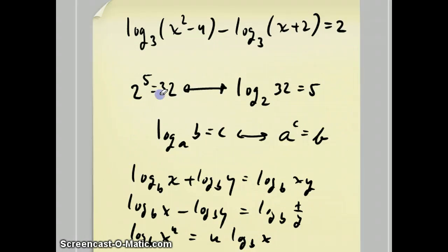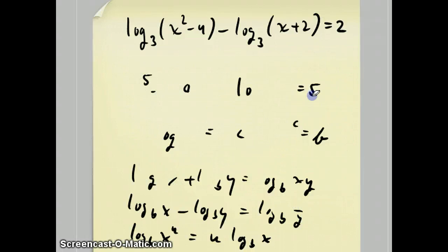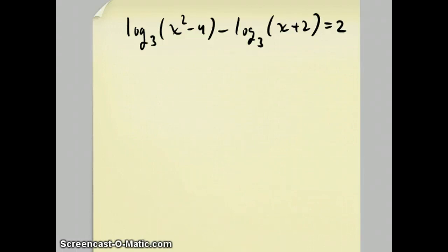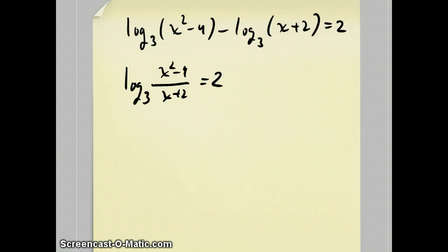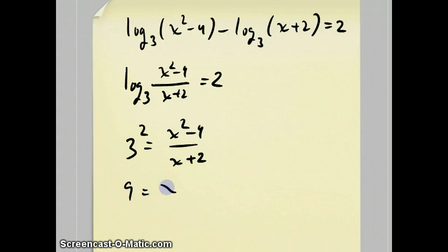Applying it to this question: use the second log rule to rewrite this as log base three of x squared minus four over x plus two equals two. We can now rearrange this to say three squared equals x squared minus four over x plus two, which is nine equals x squared minus four over x plus two. Out of time — to be continued in the last part of this tutorial series.